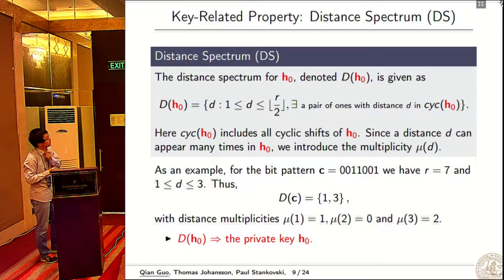We will show how to get the private key from the decoding error probability for different error patterns. First, I will introduce a key-related property called distance spectrum. The distance spectrum is a set that includes all possible distances where in this vector there exists a pair of ones with distance d, and cyclic shift is allowed.